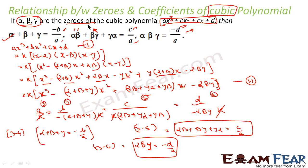Thus we have derived the relationship between zeros and coefficients of the cubic polynomial. Please understand and learn this formula — it is crucial and we'll have to use it again and again. Note: if you are not able to follow this derivation, you can also skip it, as it is not part of the NCERT Class 10 syllabus.